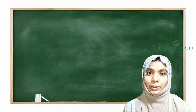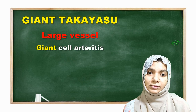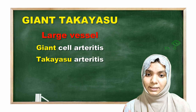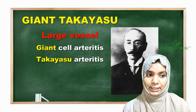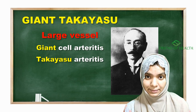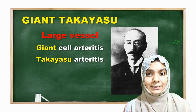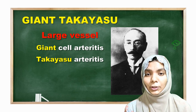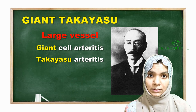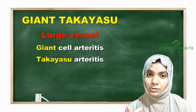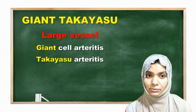Large vessel vasculitis includes giant cell vasculitis and Takayasu's vasculitis. Takayasu was a famous ophthalmologist from Japan. With all due respect to him, let us use the mnemonic 'Giant Takayasu' — imagine Dr. Takayasu as a giant. So 'Giant Takayasu' is the mnemonic for large vessel vasculitis.